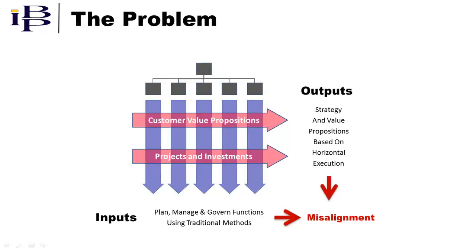As we saw in a previous video, a key problem facing complex manufacturers is that their strategies and value propositions are often based on superior horizontal execution. However, they plan, manage, and govern their business along functional lines. In other words, there's a misalignment between strategy and governance.